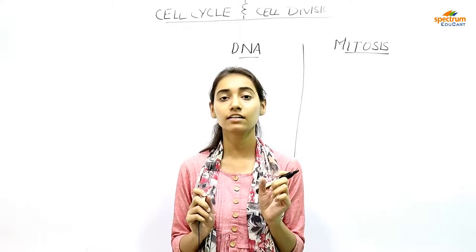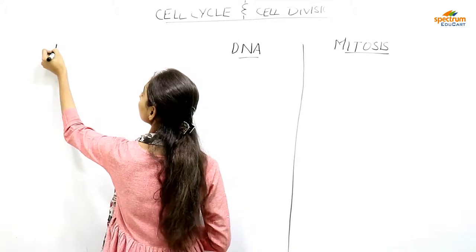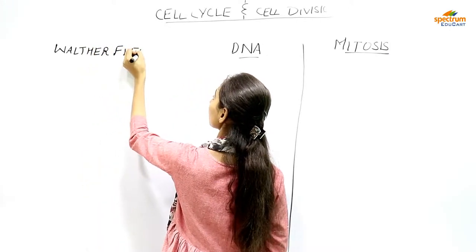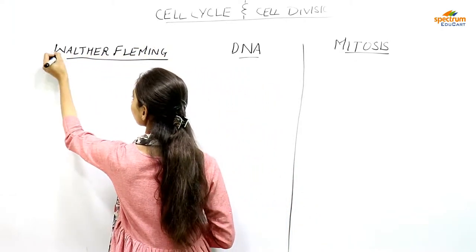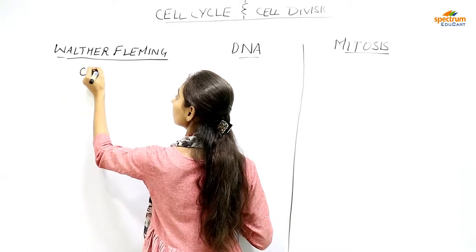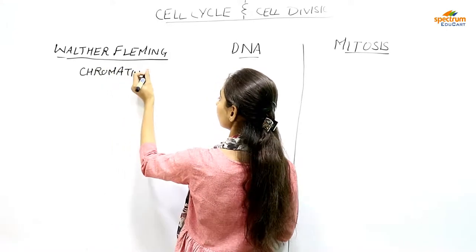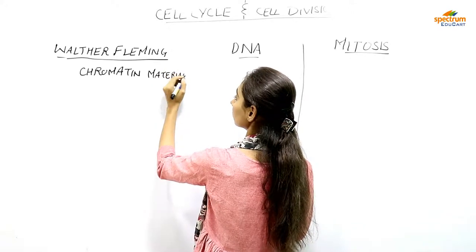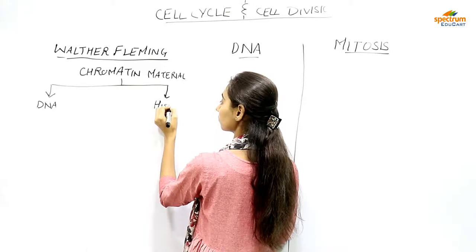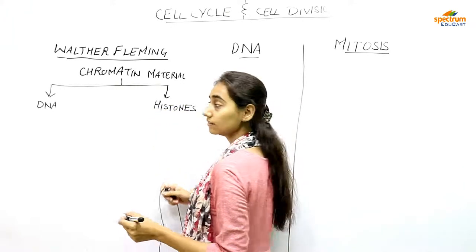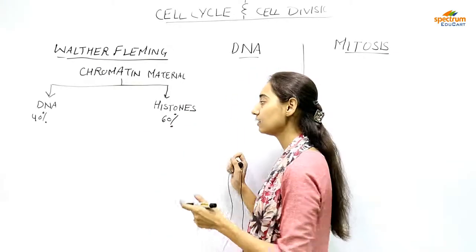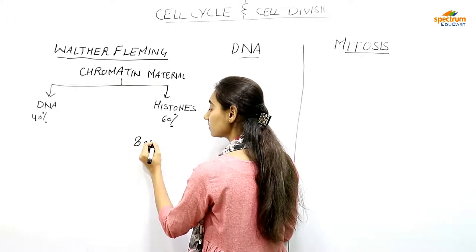We have to remember the name of the scientist who discovered the chromosome: Walter Fleming. He discovered chromosomes. Chromosomes consist of chromatin material which is made up of DNA and histones. DNA accounts for 40 percent of the chromatin material and histones account for 60 percent. Histones are protein bodies — eight protein bodies that are wound together.